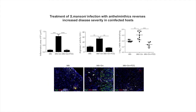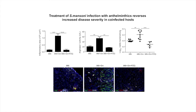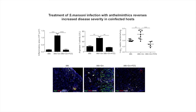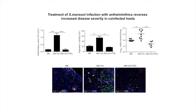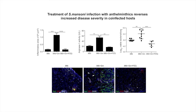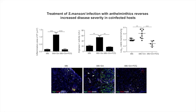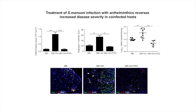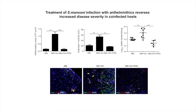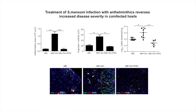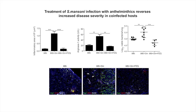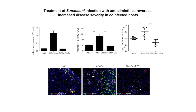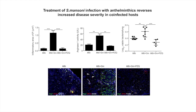We then addressed if we can reverse increased disease susceptibility in co-infected hosts by treatment with antihelminthics. We found that treatment of co-infected mice with praziquantel reversed increased disease susceptibility, because it decreased arginase 1-accumulating macrophages in the lung and also decreased increased susceptibility to tuberculosis.